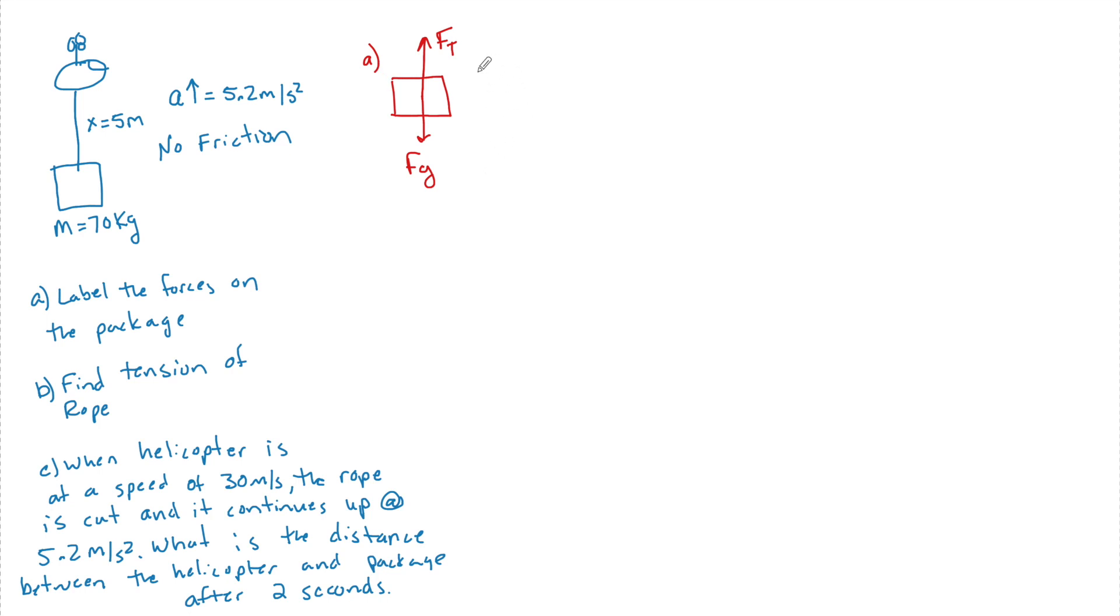Now to find the tension of the rope, we need to know the net force acting on this rope. So we see that for B, F net equals—I'm going to call up positive—so I'm going to say FT minus FG. That is the net force acting on this box.